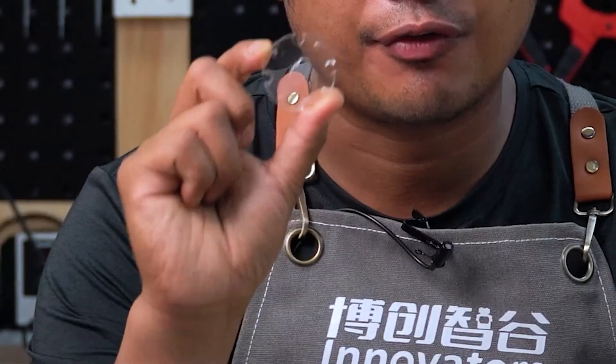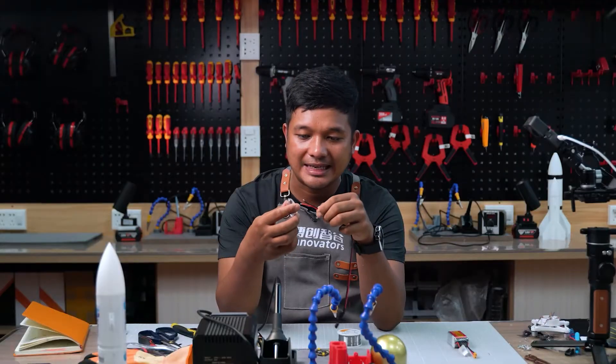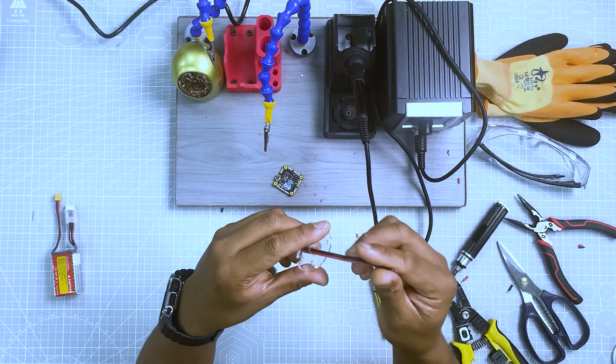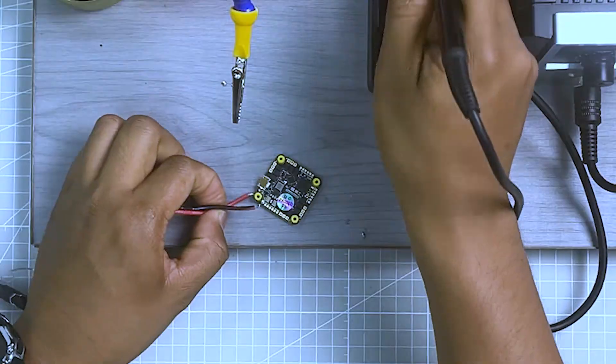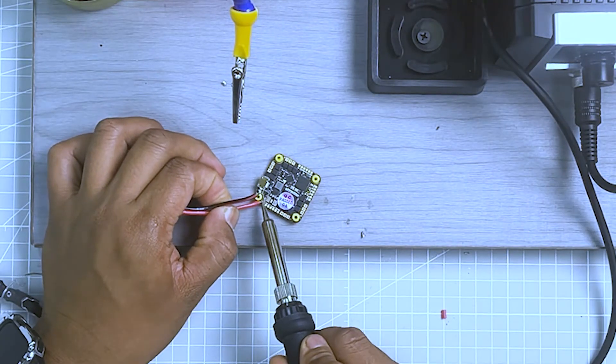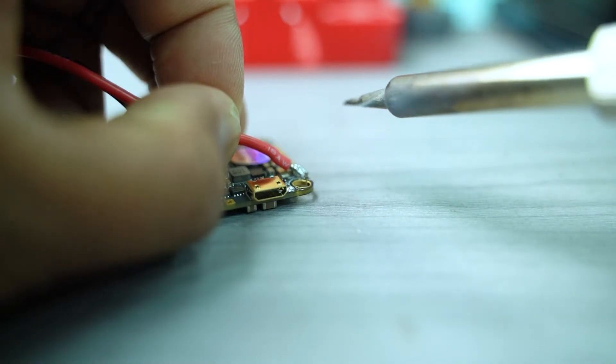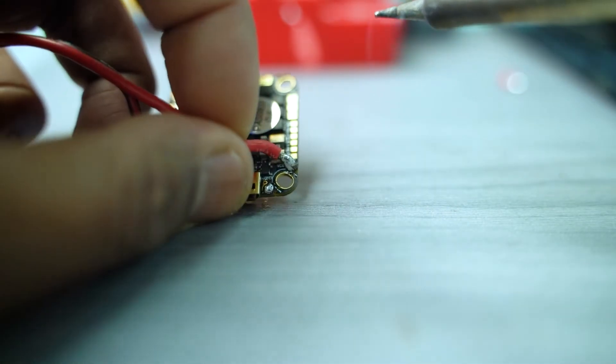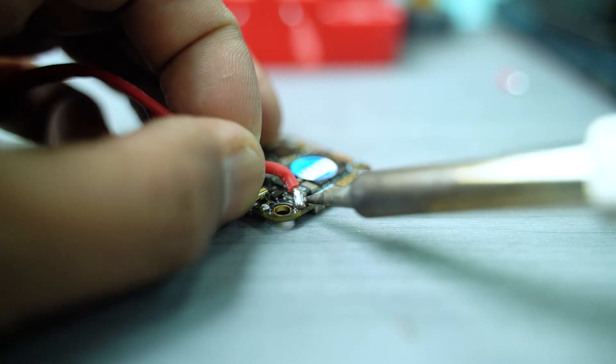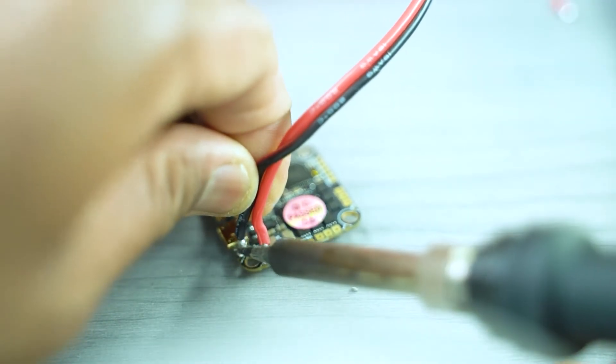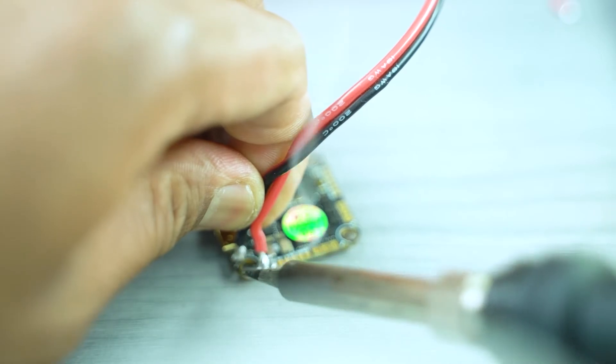Before we solder the wire, make sure that you insert first the wire to the flight controller cover. Insert the wire on the middle hole. Solder now the wire to the flight controller power input pad. Make sure that no excess of soldering lid falls to some part of the flight controller, for it may cause short circuits burning your flight controller. Gently solder the wire to the power input pad.